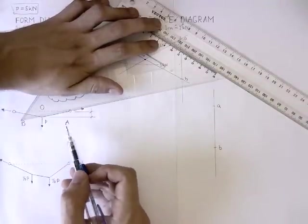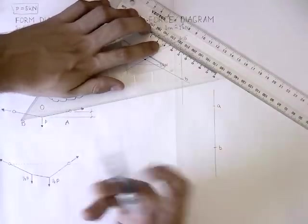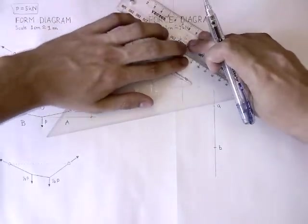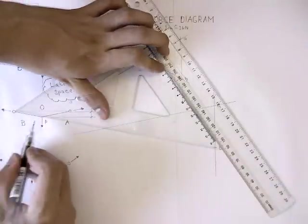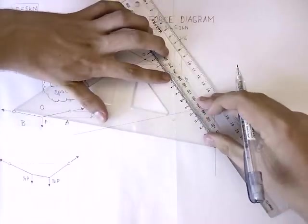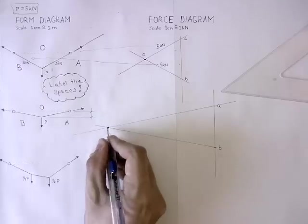Transfer the line running between spaces A and O into the force diagram so that it runs through the point A. Transfer the other line so that it runs through point B. Where the two lines meet is point O.